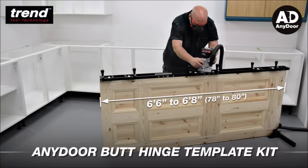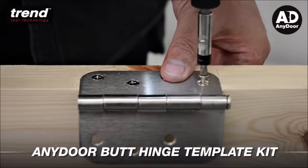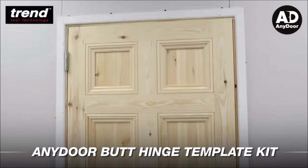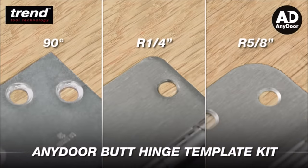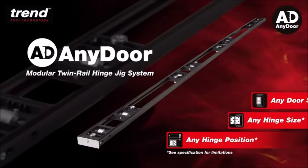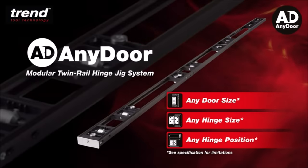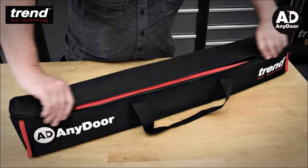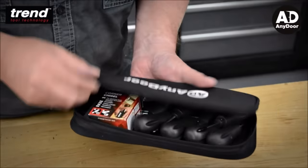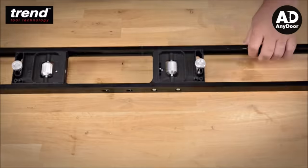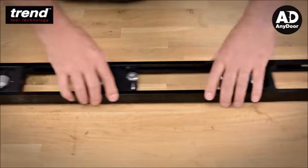Number 8. The Trend 9 Feet Any door-but-hinge template kit is a game-changer for carpenters, offering a fully adjustable jig that accommodates all hinge sizes, positions, and door heights. Its modular rail construction enables adjustments from 2 feet 6 inch to 9 foot, covering standard door sizes 6 feet 6 inches, 6 feet 8 inches, 7 feet 0 inches, 8 feet 0 inches, and 9 feet 0 inches.